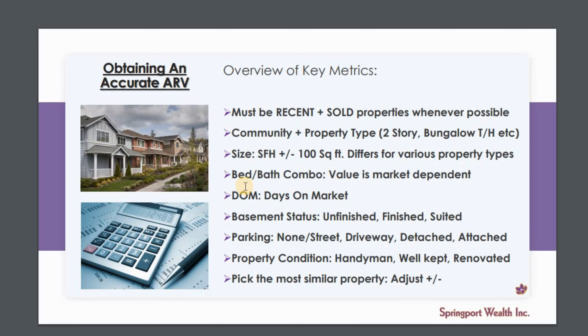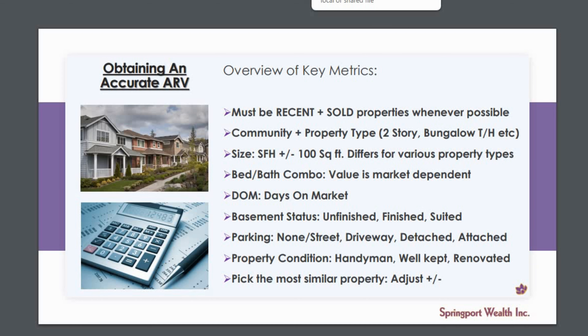Next is the bed and bath combo, and this value is also market dependent. In some markets a bedroom can be worth $10,000 to $15,000, sometimes even $7,500 give or take. In markets where you can buy a home for around $100,000, the bedroom value would be a little bit lower. So keep in mind there's a sliding scale depending on the market you're in.